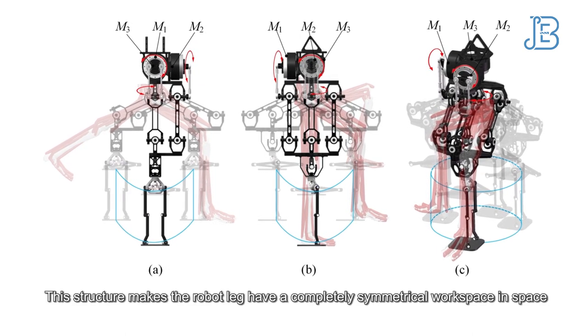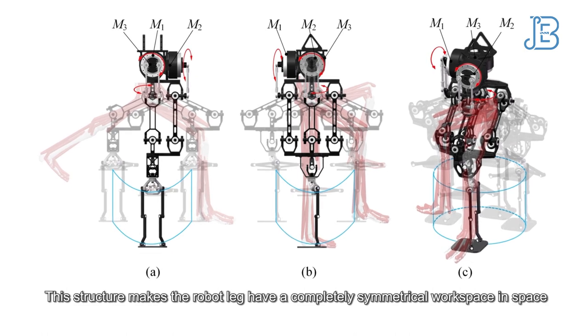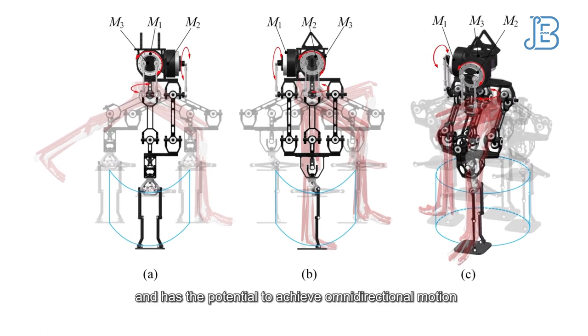This structure makes the robot leg have a completely symmetrical workspace in space and has the potential to achieve omnidirectional motion.